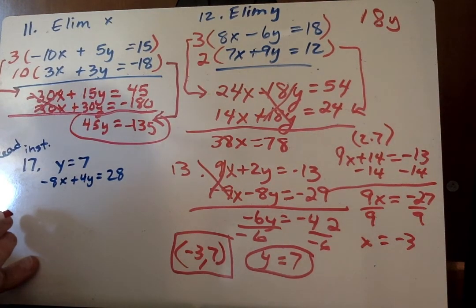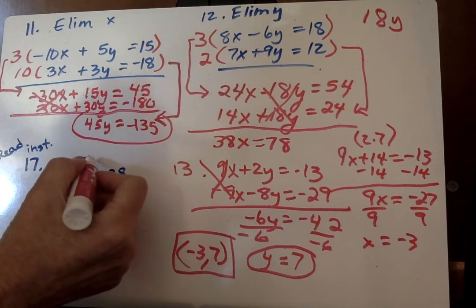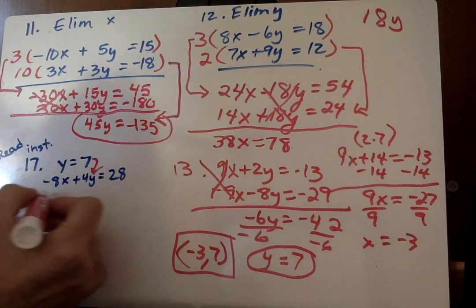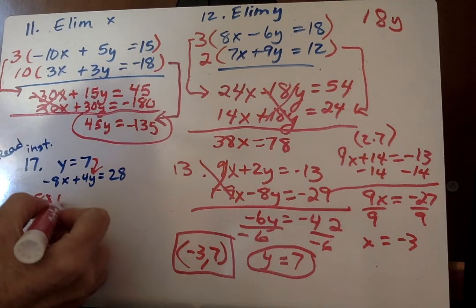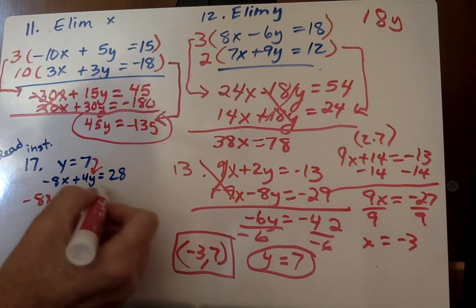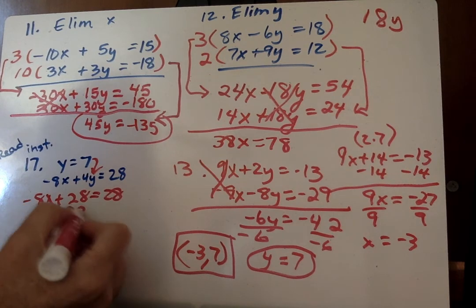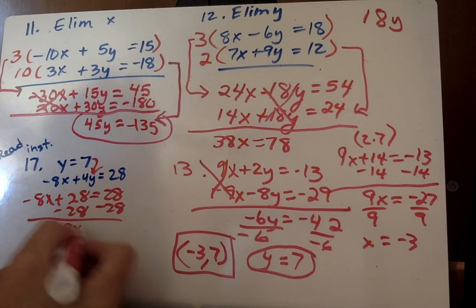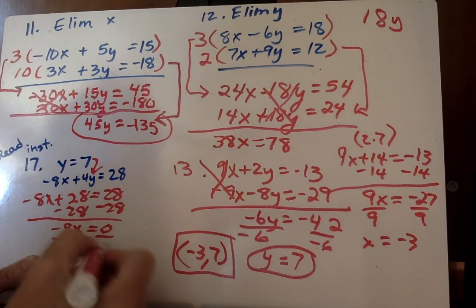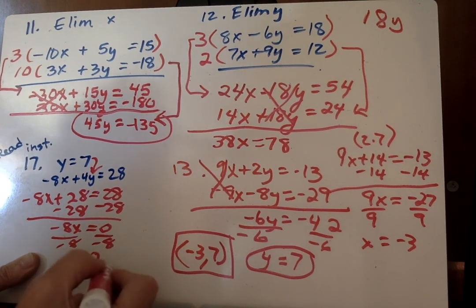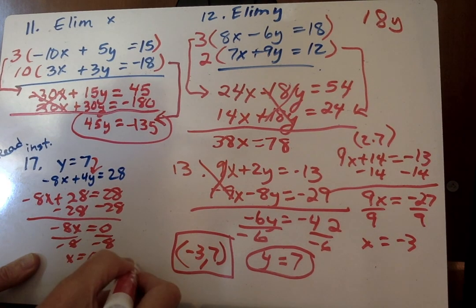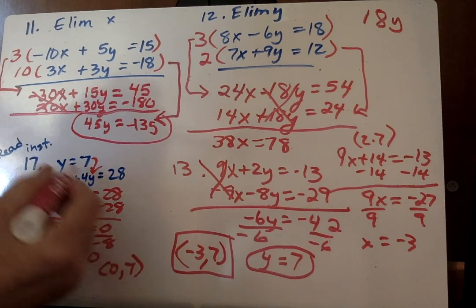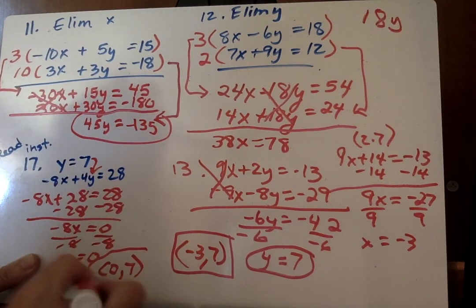On 17, I'm going to jump to there, where we're just taking this 7. We're going to put it in there, and we say negative 8x plus 28 equals 28. Minus 28. Negative 8x equals 0. Divide by negative 8. x equals 0. So then we get our solution is 0, comma 7. We don't need to plug anything back in, because it already tells us y is 7.